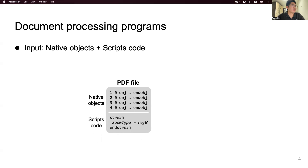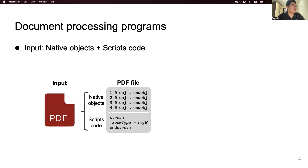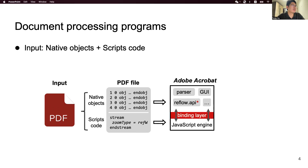Script code is an interpreted language embedded in a document. When we open a document, it first parses the native objects and then interprets and executes the script code. To bridge the gap between native objects and the script code, a binding layer is usually used to translate and transform the representation.